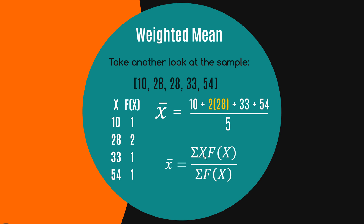So if you were to see a weighted mean formula — multiplying all values of x by their frequencies, summing them up, and dividing by the sum of all the frequencies — it should be quite intuitive. A regular mean is just a weighted mean where all the weights are one. So a weighted mean is really nothing special, just a fancy formula.